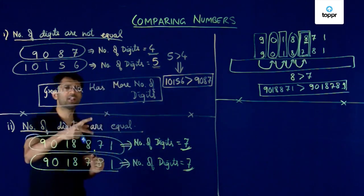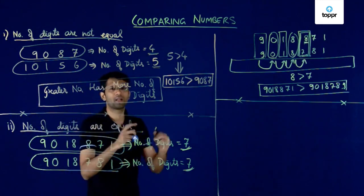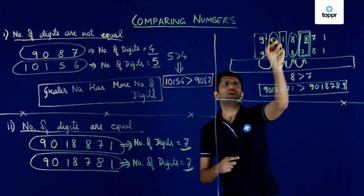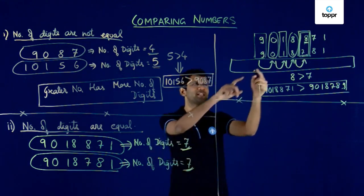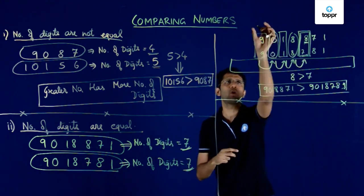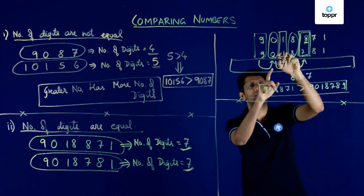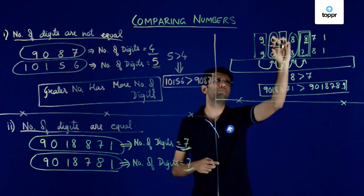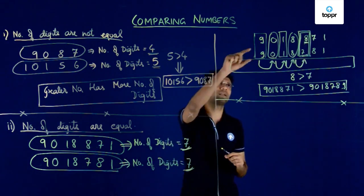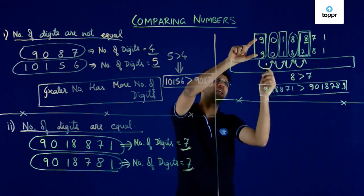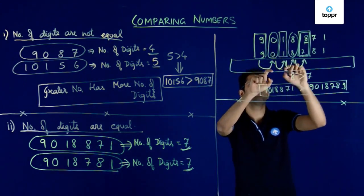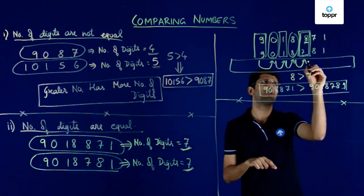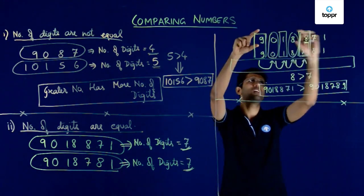If the number of digits are equal, we write the numbers one below the other and compare from the leftmost digit. If the leftmost digits are equal, we compare the digit to the right, continuing rightward whenever digits are equal. In our example: 9 and 9 same, 0 and 0 same, 1 and 1 same, 8 and 8 same — but 8 and 7 are not the same, so we stop. Because 8 is greater than 7, the first number is greater than the second. In this way we can compare any two given numbers very easily.